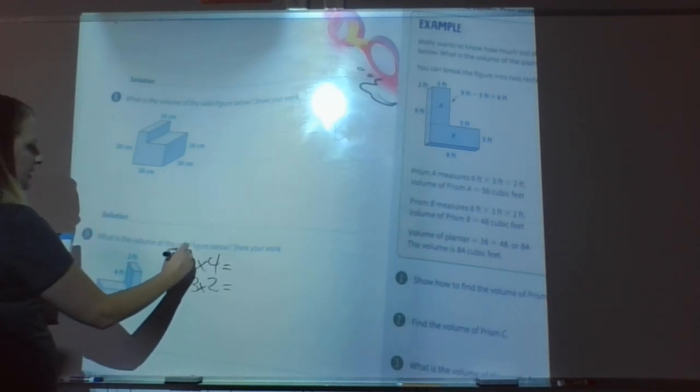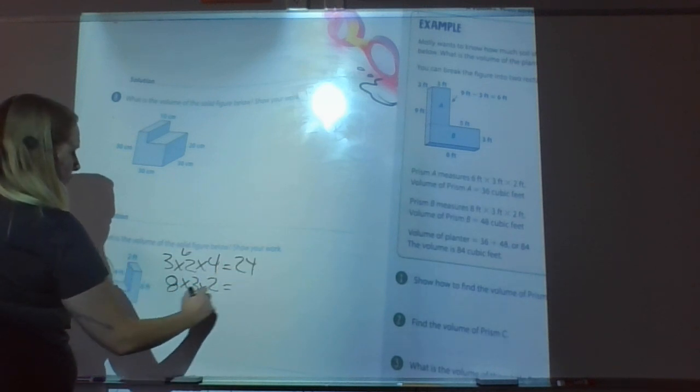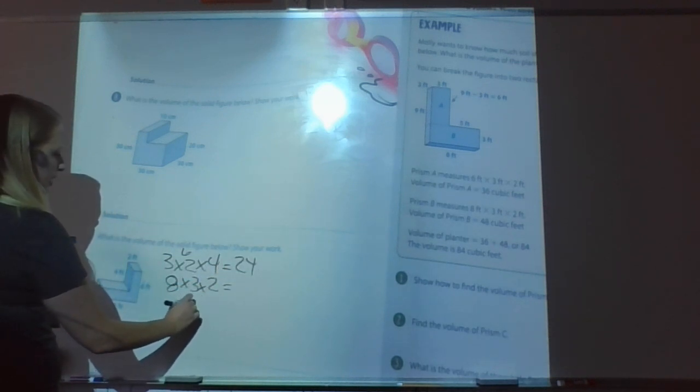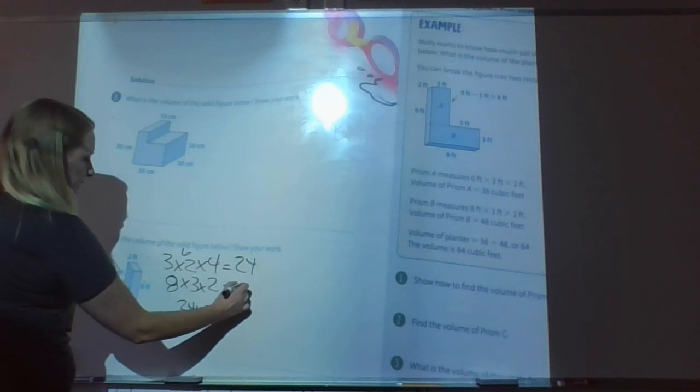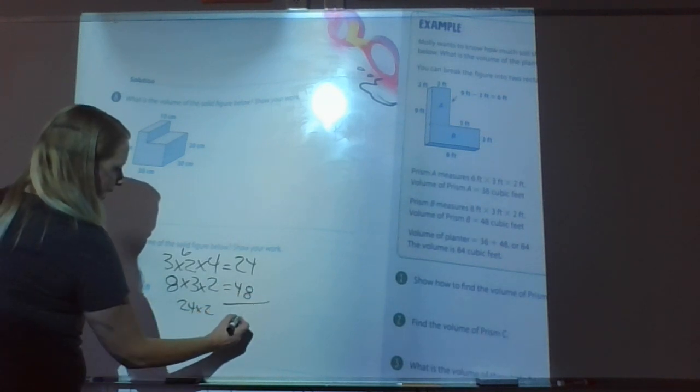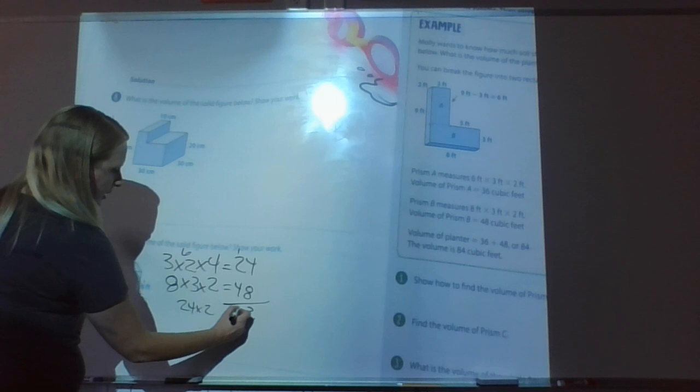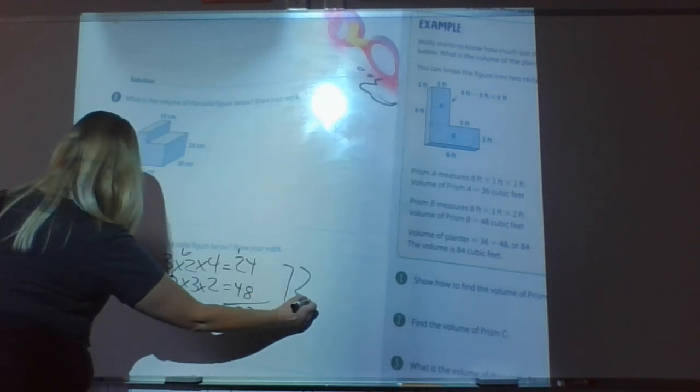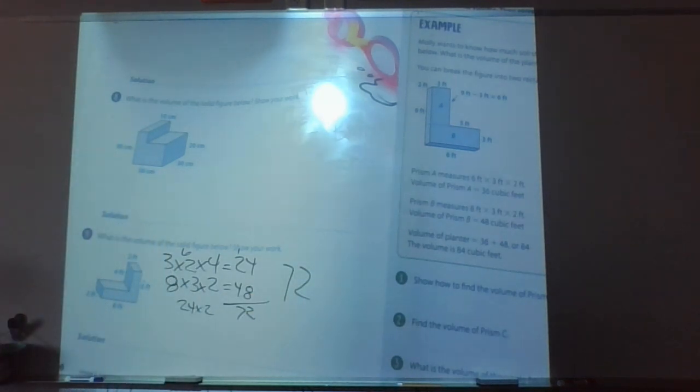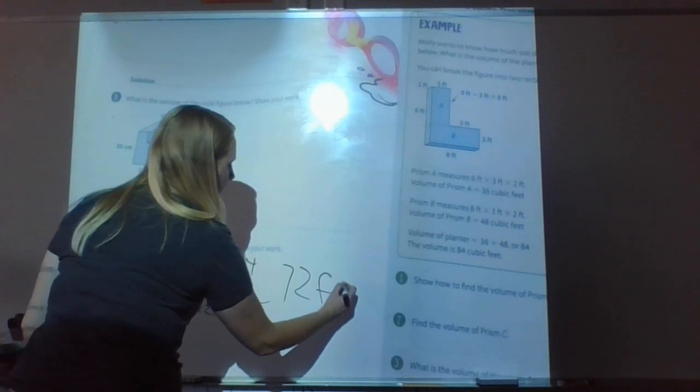Three times two is six, times four is 24. Eight times three is 24, times two is 48. Then we add those together and we get 72 cubic feet.